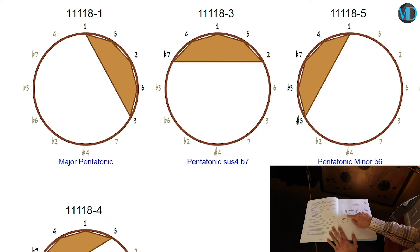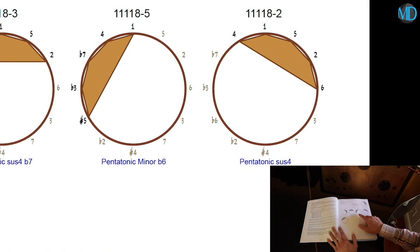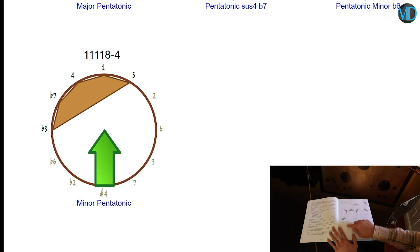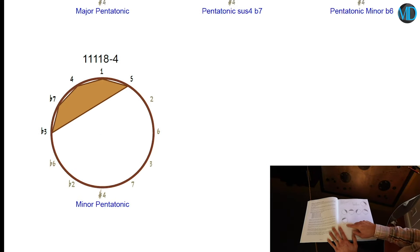Mode 1, the source scale, is a major pentatonic. Mode 2 is a pentatonic sus4 b7. Mode 3 is a pentatonic minor b6. Mode 4 is a pentatonic sus4. And mode 5 is actually the minor pentatonic scale.